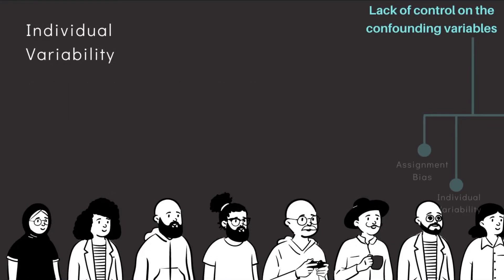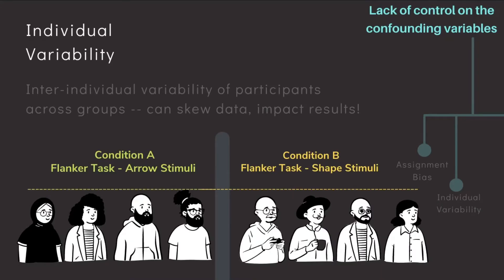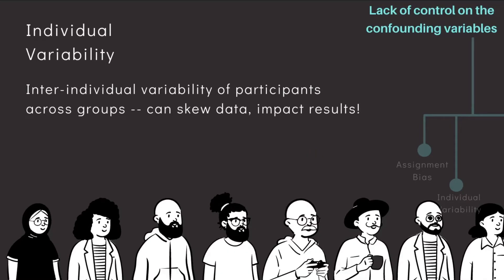The other aspect that can introduce confounds pertains to individual variability. Recall that participants across the different conditions are different in the between-subjects design. This is very likely to introduce inter-individual differences, such as personality trait differences. Although there are ways to address this, if remained unchecked, individual variability could negatively impact the conclusions we make about the research questions by skewing the data.